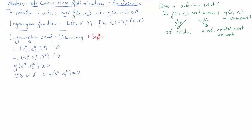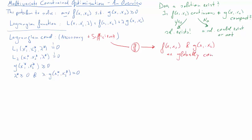These Lagrange conditions are necessary conditions which any optimum must meet. Under some conditions they are also sufficient, meaning if a point meets these conditions then it is the solution. These conditions are sufficient if the function f of x1 and x2 and the constraint g of x1 and x2 are both globally concave. When both conditions are met, the Lagrange conditions become necessary and sufficient conditions.